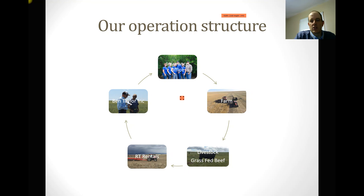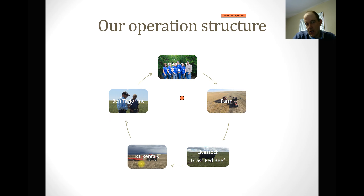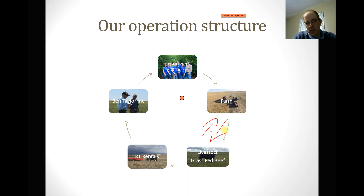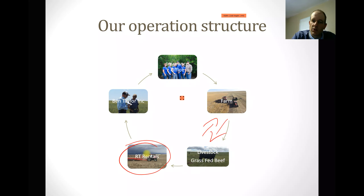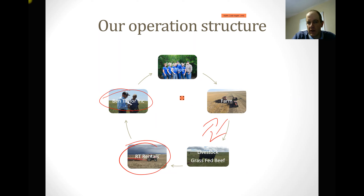What does our operation entail? We have an insurance office and a farm, a grass-fed beef operation that we're starting to use more in the farming part, which we'll get into in the crop rotation presentation. We rent some equipment — basically just a roller and a tractor anymore. And then we sell ag chemicals for Ben Taylor Inc. through a warehouse that is attached to our insurance office.